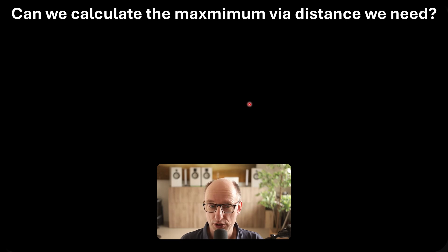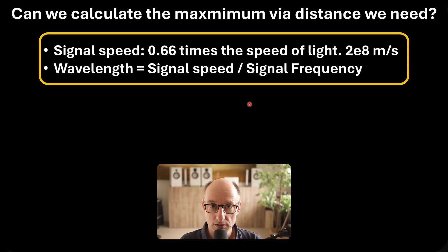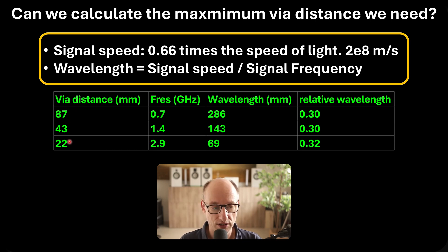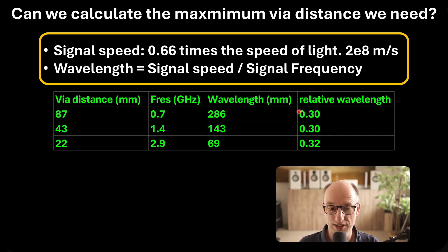So the question becomes: based on these measurements, can we calculate the maximum via distance we need? There's a relationship with wavelength, so we need to calculate the wavelength. A signal speed on a coaxial cable or transmission line is virtually always 0.66 times the speed of light, which is 200,000 meters per second — you can always take this as a rule of thumb. The wavelength is the signal speed divided by the signal frequency. We see a table showing via distance in millimeters, the first resonance frequency, and the wavelength. If we divide the via distance by the wavelength, the result is consistently 0.30. So problems start occurring at 0.3 times the wavelength.